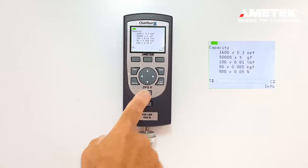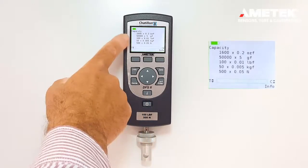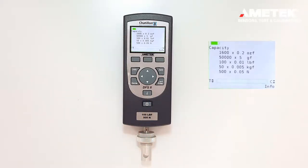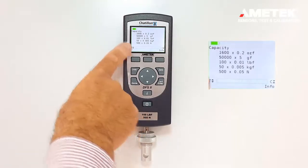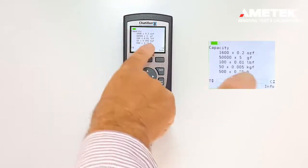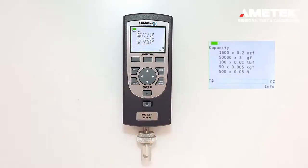If you press the information button the first time, you can see the capacity of your force gauge with the different units available. Right now we are using newtons and the smallest variation available when in newtons is 0.05 newtons.